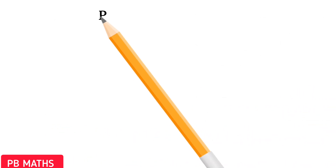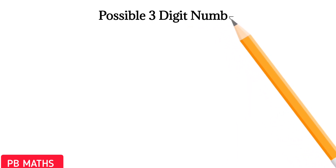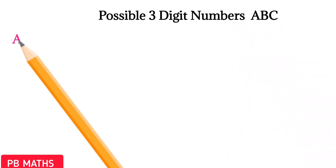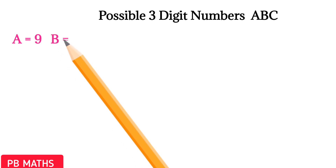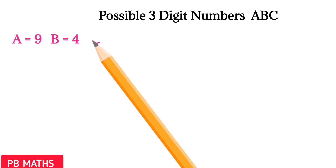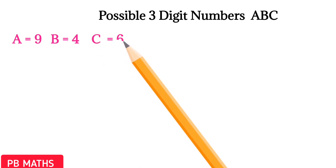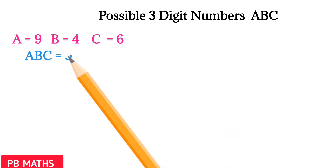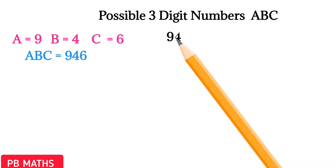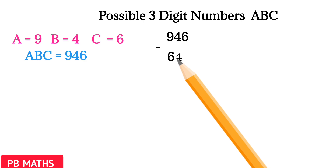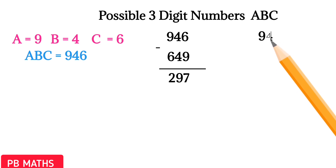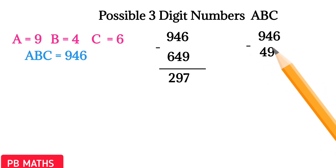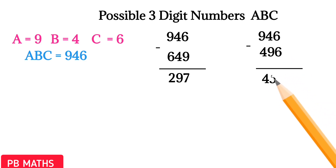Now let's find all possible 3-digit numbers ABC. First, let's put A equals 9. Since A minus B equals 5, B becomes 4. And since C minus B equals 2, C becomes 6. So the 3-digit number is 946. Verifying: 946 minus 649 gives 297 — satisfied. And 946 minus 496 gives 450 — also satisfied.